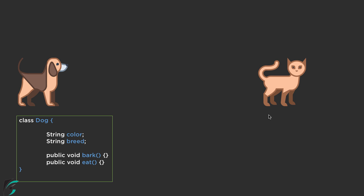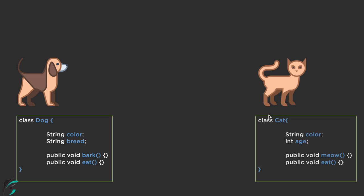Now similarly, in case of cat, we can have this class cat having the string color, age, and some activities such as meow and eat. Now if you compare cat and dog, then you will find one thing in common.